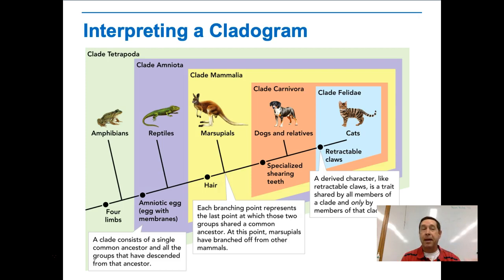How do you interpret or make one of these cladograms? A clade is a single common ancestor and all its descendants, so this diagram represents a clade. The branching points represent the last point at which two groups shared a common ancestor. In the example here, marsupials branched off from other mammals with the development of the pouch.